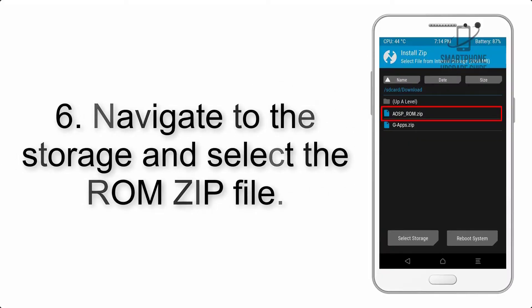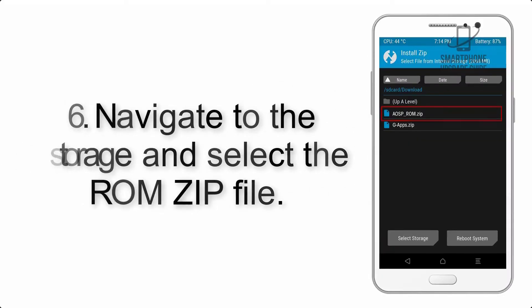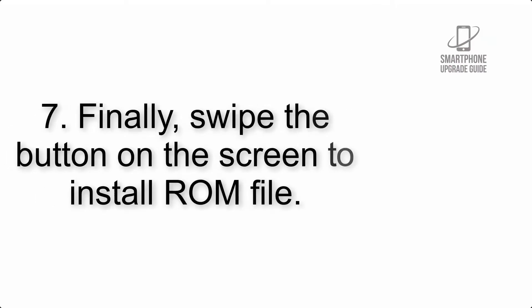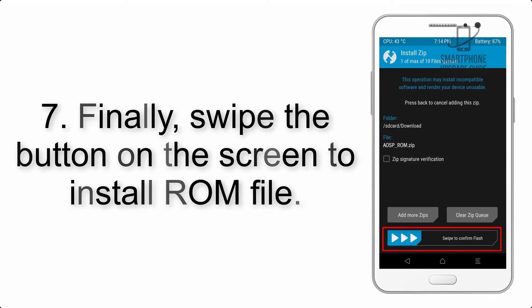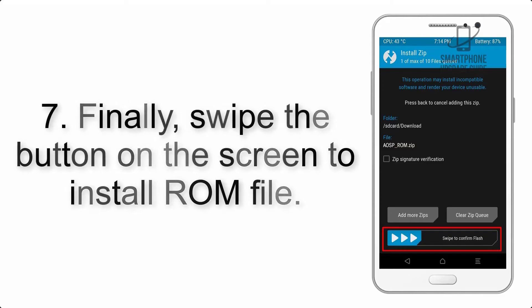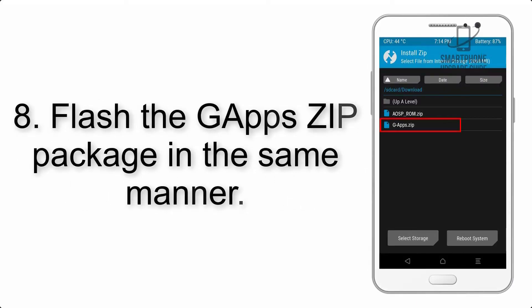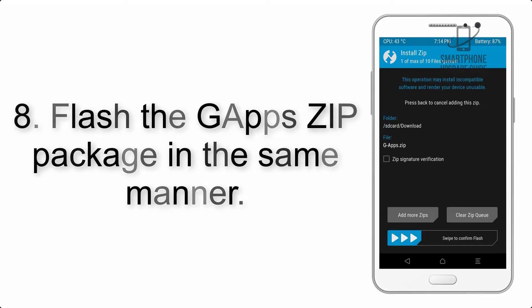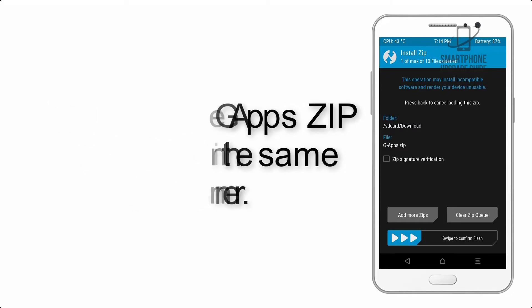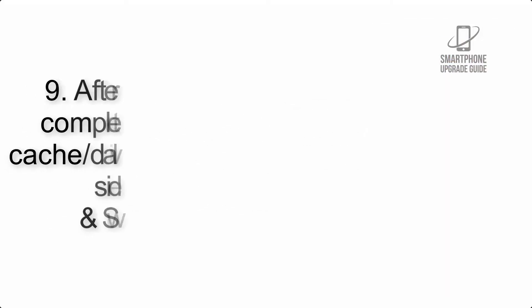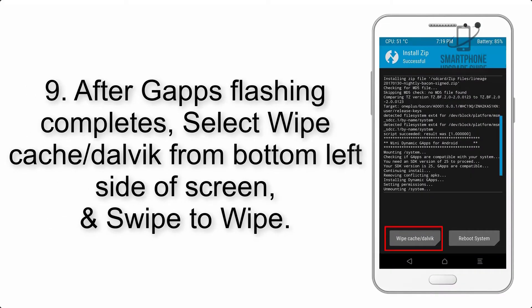Step 6: Navigate to the storage and select the ROM zip file. Step 7: Finally, swipe the button on the screen to install the ROM file. Step 8: Flash the GApps zip package in the same manner.